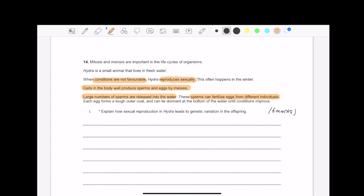Next thing says each egg forms a tough outer coat and can lie dormant at the bottom of the water until conditions improve. So how does sexual reproduction, not asexual, we are talking about sexual reproduction lead to genetic variation. So much can be said. Let's break it up.